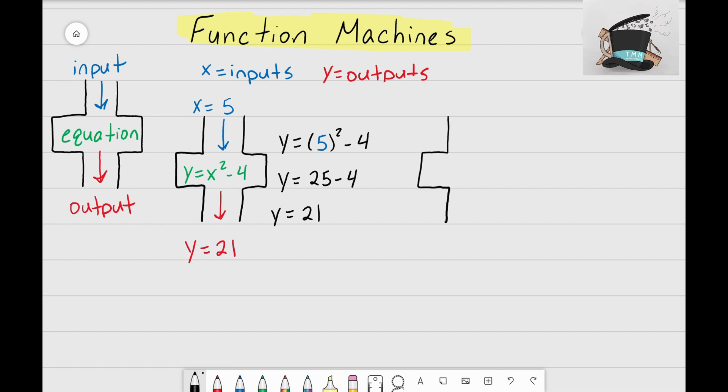and keep the same function equation machine with the same equation inside, y equals x squared minus 4. But this time let's change our input to be x equals negative 5. So last time I did positive 5, let's see